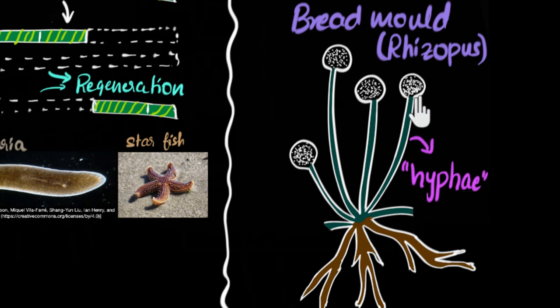The top part, this blob-like structure that you can see over here, that part is the reproductive part, and it's called sporangia. Sporangia. These are the only two names, these labels that you need to remember over here.